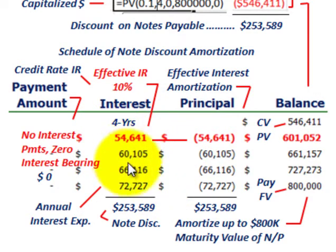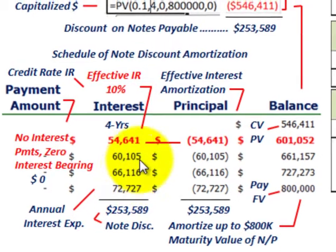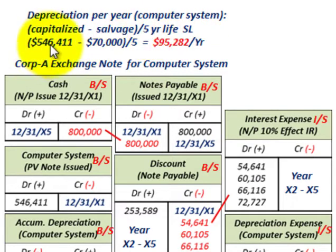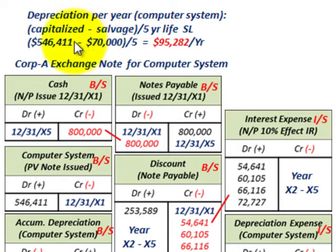We also need to record interest expense each year, and before recording entries we need to calculate depreciation per year on this computer system. Using the straight-line method: take the capitalized amount of $546,411 — the $800,000 discounted back four years at the 10% borrowing rate — less the salvage value of $70,000, divided by the five-year life. That gives depreciation per year of $95,282 under straight-line depreciation.